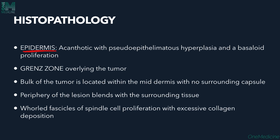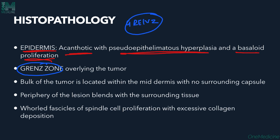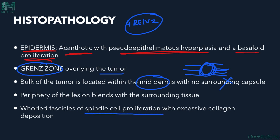Histopathology confirms the diagnosis. In the epidermis, there is acanthosis with pseudoepithelomatous hyperplasia and basal cell proliferation. A characteristic grenz zone — a separation between the dermis and epidermis — is seen overlying the tumor. The bulk of the tumor is located in the mid-dermis, and the tumor has no surrounding capsule; its periphery blends with the surrounding tissue.